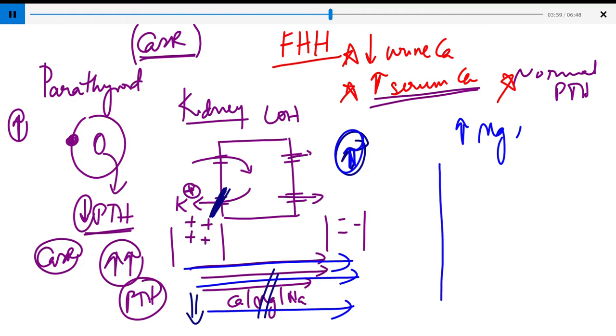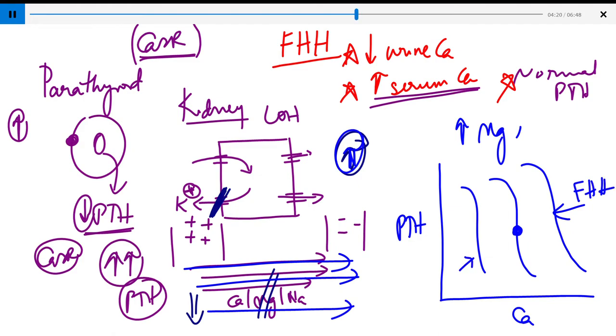If we plot this with PTH secretion on the x-axis and calcium concentration on the y-axis, if the middle one is normal, this is what an FHH person's graph would look like. And this is what will happen if you increase the sensitivity of CASR to calcium.